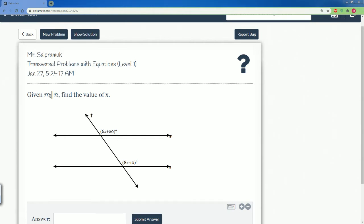Given m is parallel to n, you're going to find the value of x. We have to see how these angles are related before we set up the equation.